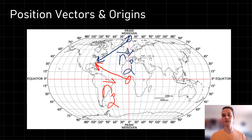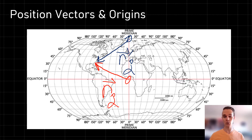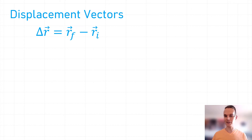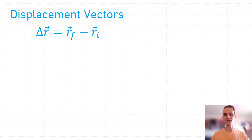If you're working on a specific problem, it's important that you have the same origin choice for all position vectors in that problem. Let's use our knowledge about position vectors to describe and understand displacement vectors.